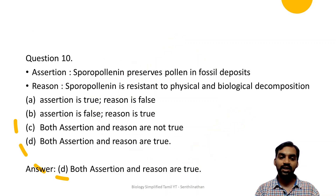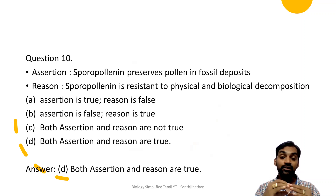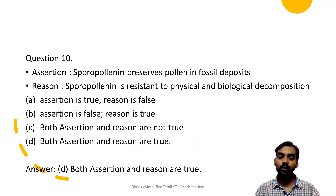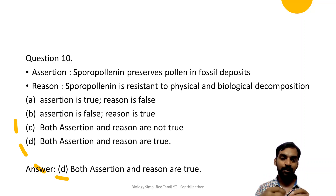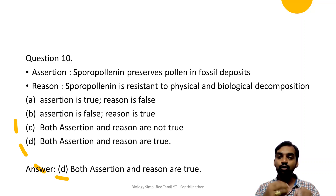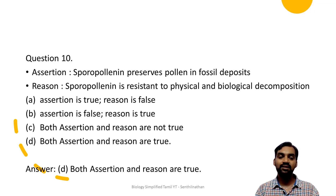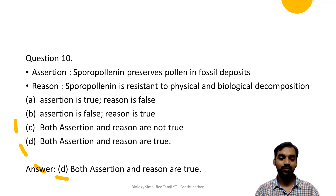Sporopollenin preserves pollen in fossil deposits. When pollen falls into the soil, it is protected by sporopollenin. Sporopollenin is resistant to physical and biological decomposition - physical factors like radiation and temperature, and biological decomposition by bacteria and fungi. Therefore, both the assertion and reason are correct.